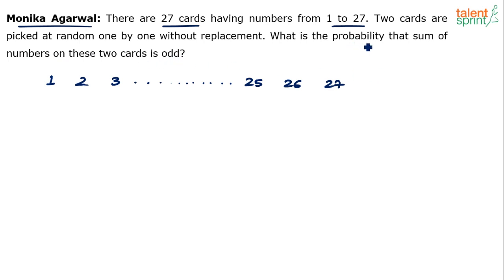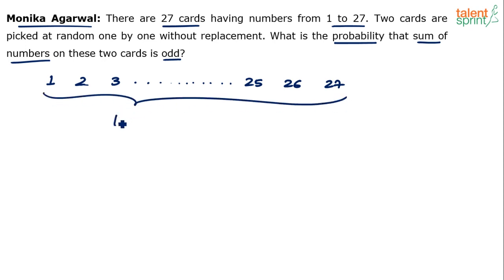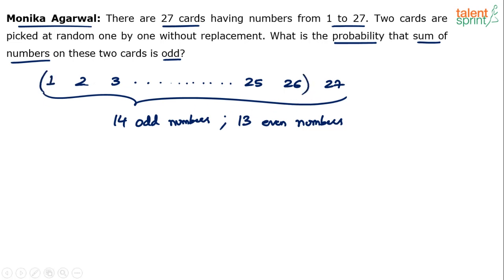We want the probability that the sum of the two chosen numbers is odd. For this, you need to understand that the sum of two numbers can be odd if and only if exactly one of the numbers is odd. In this set of 27 numbers, we have 14 odd numbers and 13 even numbers. Up to 26, there are 13 odd and 13 even. The 27th number, which is 27 itself, is also odd — so 13 plus 1 gives 14 odd numbers and 13 even numbers.